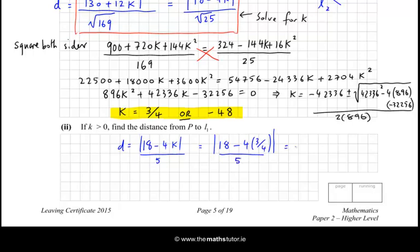All over 5, so that is 18 - 3, because these 4s cancel. And I don't need the absolute value signs, because the top is positive. You don't need that if the numerator turned out to be negative inside the modulus signs, but it isn't. So 15 divided by 5 is 3. So the answer is 3 units, whatever those units are. That's the distance from P to L1. And I think that completes that question.